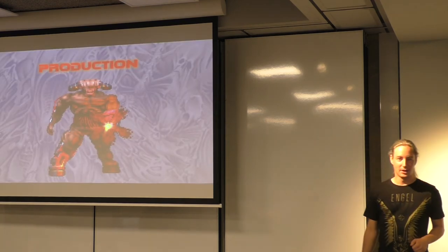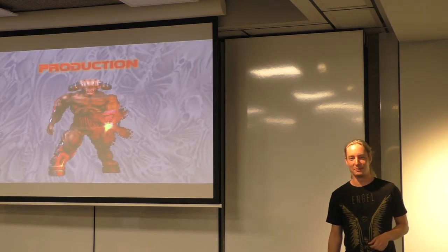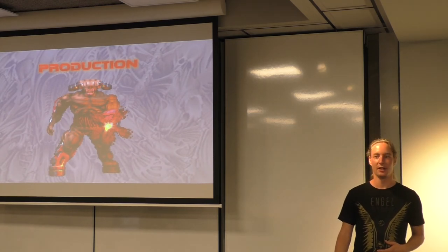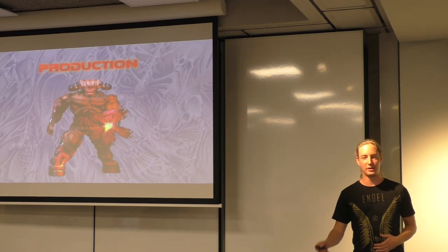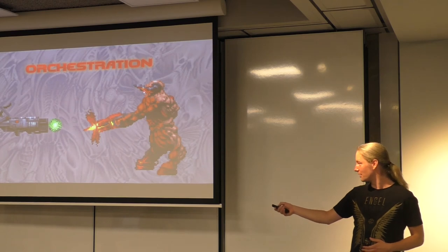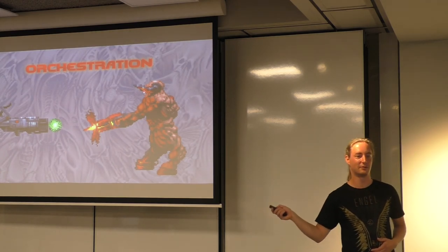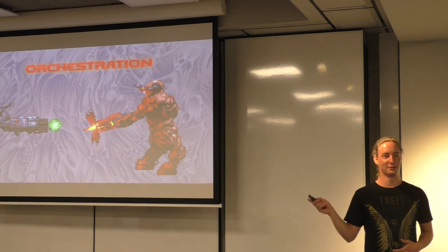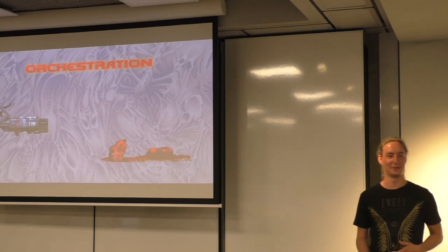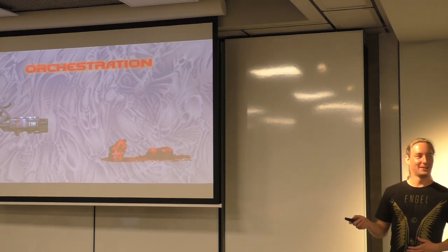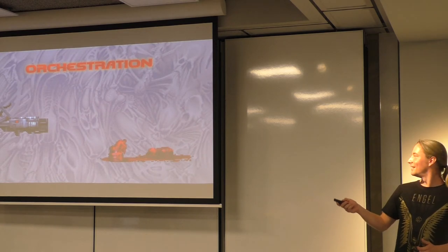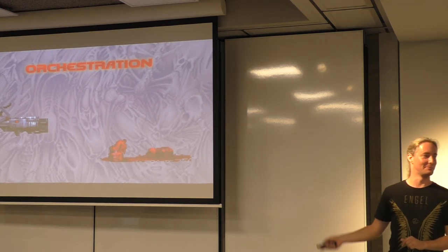The biggest demon of all is running stuff in production — that's the really hard part, and also the part where cloud-native technologies help the most. That's why the cloud-native technologies are represented by the BFG, the Big Fucking Gun — the biggest gun you can have in Doom.